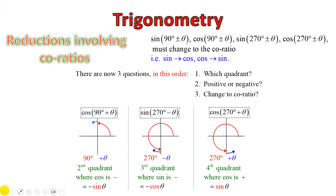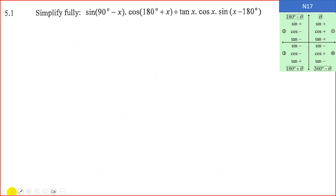That's just to look at the co-ratios — 90 plus or minus, or 270 plus or minus. So let's now go into some past paper questions.